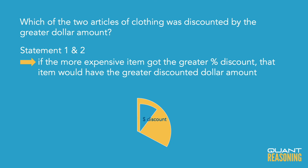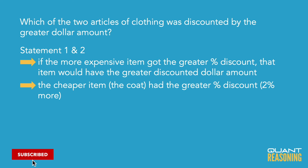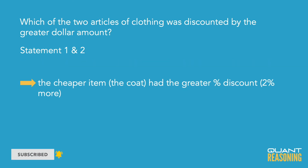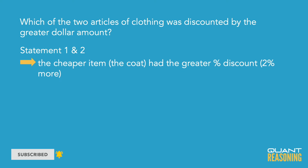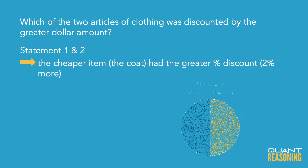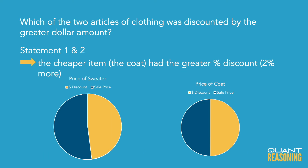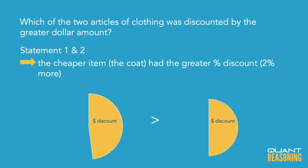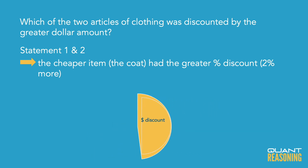But look at what they did here. They are telling us that the bigger percent discount is on the cheaper item. So now the extra two percent discount coming from the cheaper item — I don't know if that's more than enough to compensate for the missing two percent discount of the more expensive item, or not enough, or exactly enough. So I can't tell which item I'm saving more dollars on.